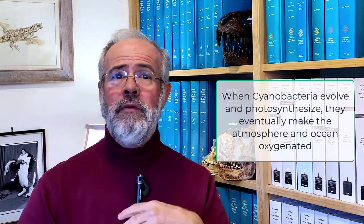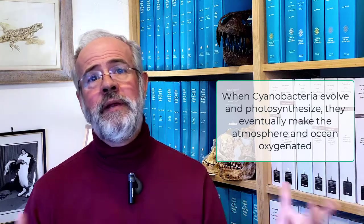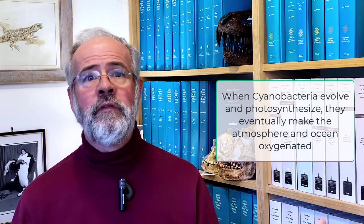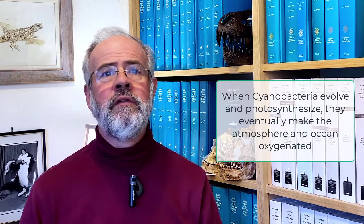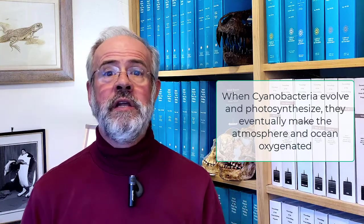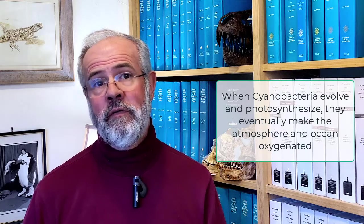Why two and a half billion years? The development of an oxygenated atmosphere at 2.5 billion years ago is the reason. Oxygen from photosynthesis completely remade the surface of Earth by speeding up weathering rates, precipitating iron from the surface oceans, making banded iron formations, and excluding oxygen-intolerant microbes from much of the Earth's surface.